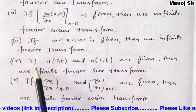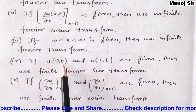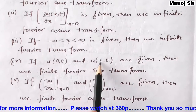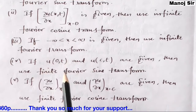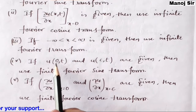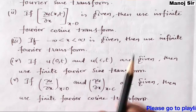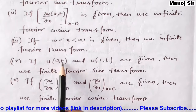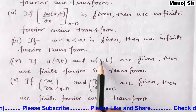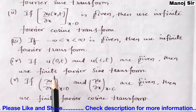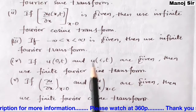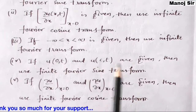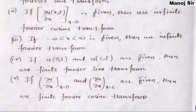The fourth point: if u is a function of x and t, and the value of u is given both at x = 0 and at x = C — meaning the limit of x is finite, ranging from 0 to C — then we need to use the finite Fourier sine transform.